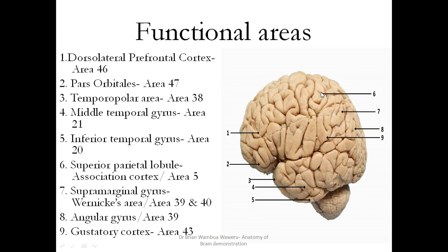Here you have the superior parietal lobule, or the association cortex, also known as Brodmann area 5. Then you have the supramarginal gyrus, or Wernicke's area, representing areas 39 and 40. The angular gyrus, area 39, is responsible for arithmetic function. Then you have area 43, which is the gustatory cortex — the parietal operculum.